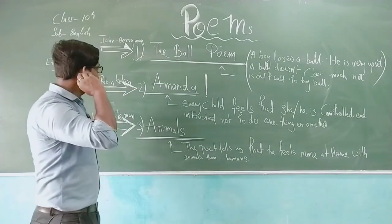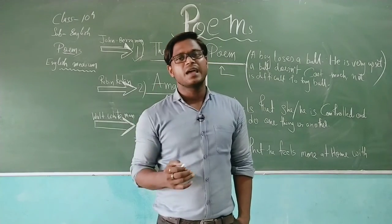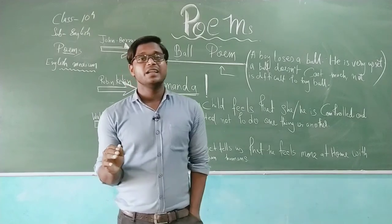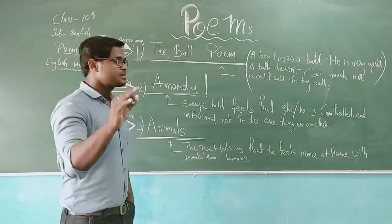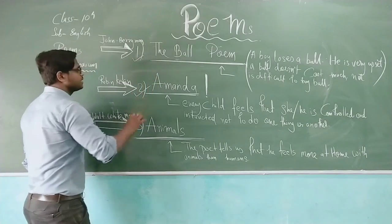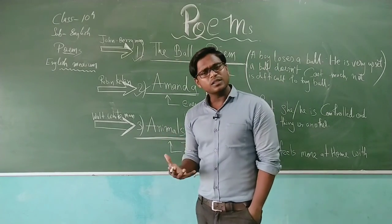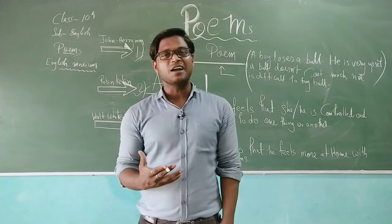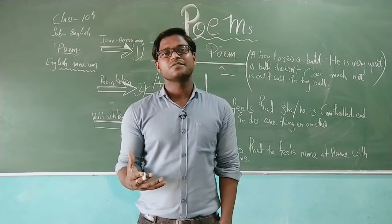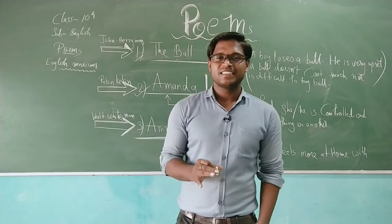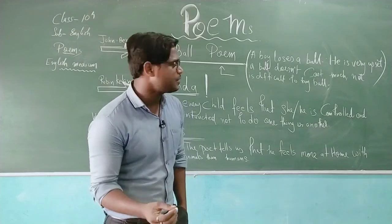Now moving to the second poem — 'Amanda'. You might have some habits like biting nails, scratching hair, making sound with objects, or chewing gums — lots of things we need to improve. Amanda is a little girl who is thinking why all kids are controlled. Actually kids are not tortured — they are just guided by their parents, elders, and teachers. But Amanda thinks this should not be happening and she should be living her life as she wishes. That is what the poem 'Amanda' is all about.